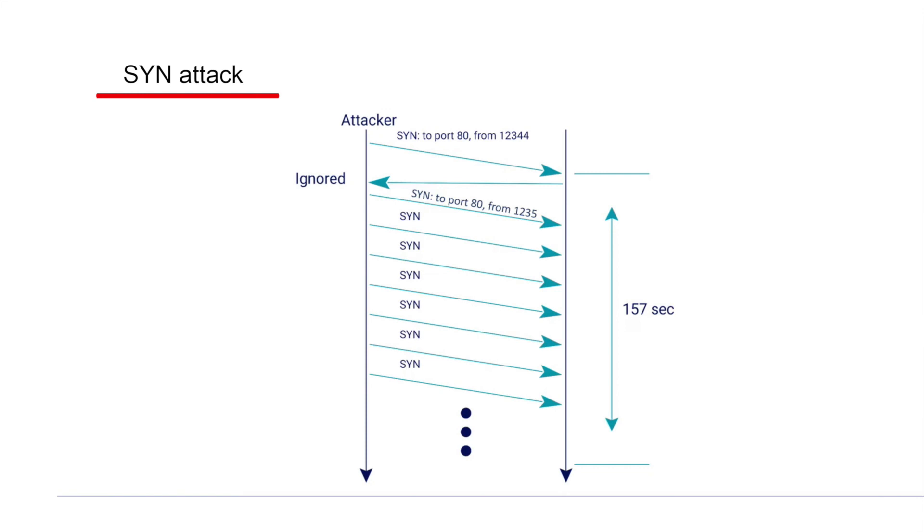The SYN attack idea is simple. Since the server allocates memory space to each SYN request because it prepares resources for the new connection, the attacker will flood the server with multiple SYN requests that will not be finally approved, which is the third part of the handshake.